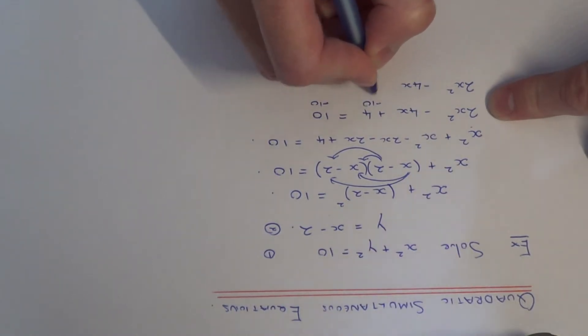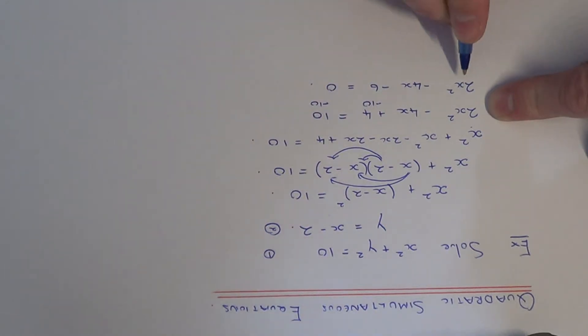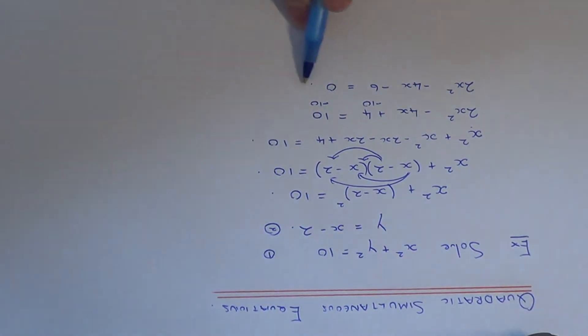So 4 take away 10 is minus 6. So we've now got a quadratic equation here. And if you've noticed, everything in here is a multiple of 2. So to make things easier, we can just divide the whole equation by 2.